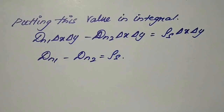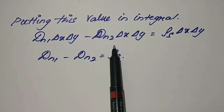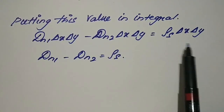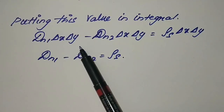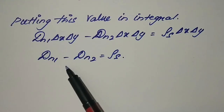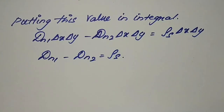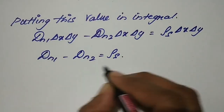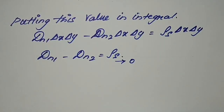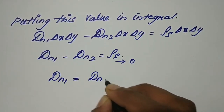Putting this into the integral for the normal component, we have D_n1 times delta x delta y minus D_n2 times delta x delta y equal to rho_s times delta x delta y, which is the charge enclosed. When two dielectrics are in contact, the surface charge rho_s will not be present, so it becomes 0. This gives us D_n1 equal to D_n2.